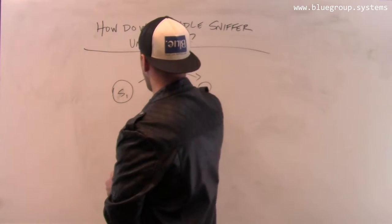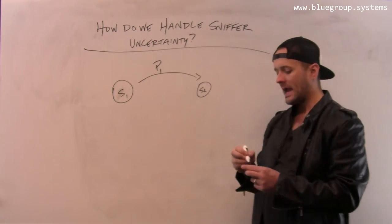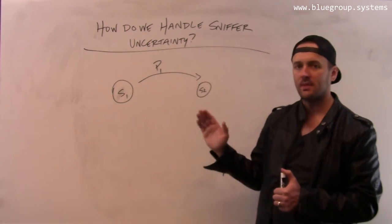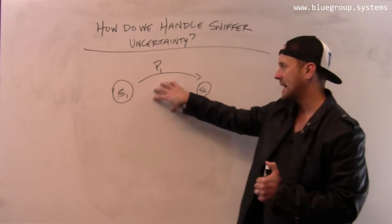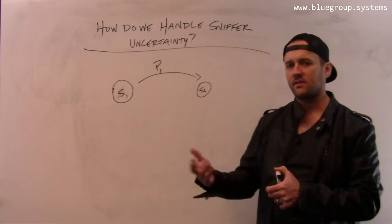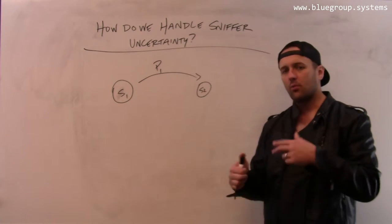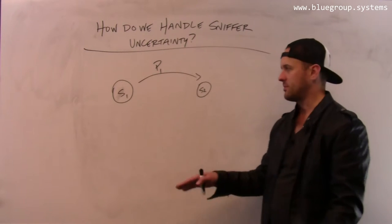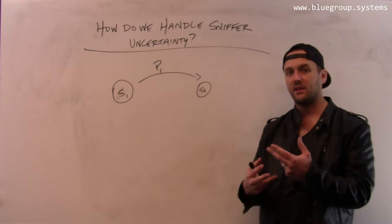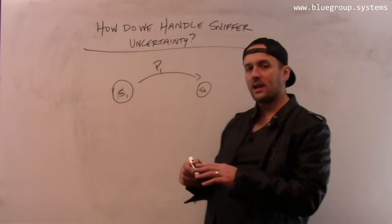And transitions from S1 to S2 happen when the device receives a certain packet of type P1. So if I'm in S1 and I receive packet P1, I transition to S2. And these states could indicate that I'm going to send a particular packet, or that I'm waiting to receive some more information. This is the protocol state machine, and this has to be provided by the developer.